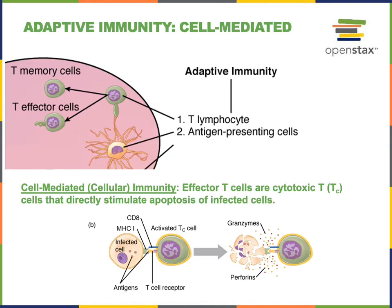The adaptive immunity involves lymphocytes that have receptors on their surface binding to antigens that are molecular patterns associated with specific pathogens. The recognition of an antigen by a lymphocyte receptor enables the adaptive immunity to form a specific defense against a particular pathogen and form an immunological memory in order to create a strong defense against that specific pathogen.